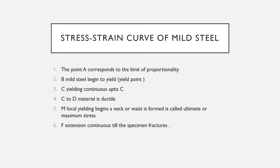As we see in the graph, point A corresponds to the limit of proportionality. The limit of proportionality is the value of stress up to which stress and strain remain proportional. Then point B — this is the point where the mild steel begins to yield, which is why it is called the yield point.